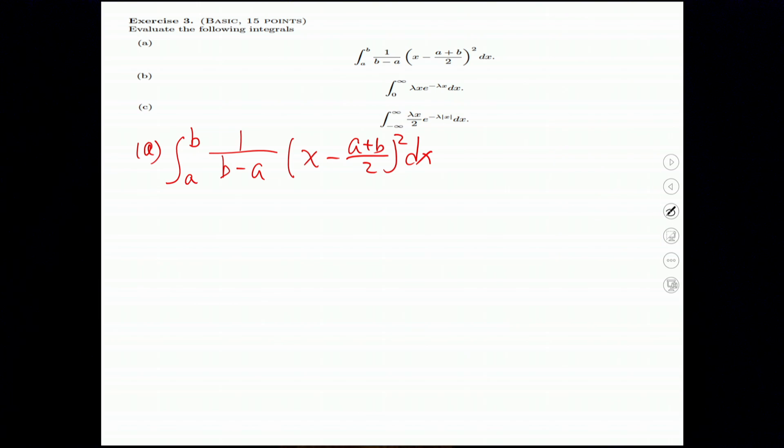First, we do the change of variables. We let Y equals X minus A plus B divided by 2. That means I have this equals Y. Since this equals Y, then our upper limit and lower limit also need to be exchanged.